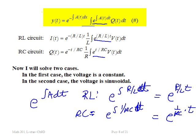We have E to the negative of the integral, which gives E to the minus R over Lt and E to the minus t over RC. Those are the conclusions: that is the current in the RL circuit, and that is the charge in the RC circuit. Now we need to address what voltage is — we'll do two cases: constant voltage and sinusoidal voltage.